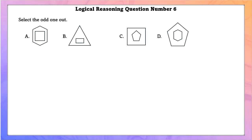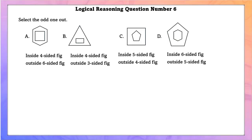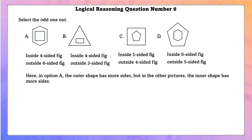Logical reasoning question number 6 — select the odd one out. In option A, inside there is a 4-sided figure and outside a 6-sided figure. In option B, inside is 4-sided and outside is 3-sided. In option C, inside is 5-sided and outside is 4-sided. In option D, inside is 6-sided and outside is 5-sided. In option A, the outer shape has more sides, but in all other options the inner shape has more sides. So the odd one out is option A.